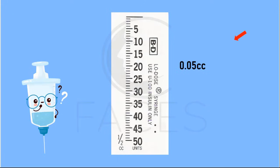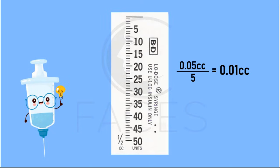As in every case, the numerator is the volume of increments designated by numbers, and the denominator is the number of lines between the numbered marks. The resulting quotient is 0.01 cc's. Every line on this syringe has a liquid volume of 0.01 cc's.